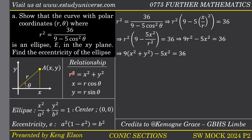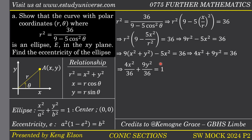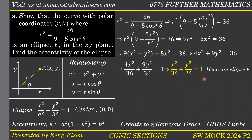From 4x squared plus 9y squared equals 36, we divide all terms by 36 to get the right-hand side equal to 1, so it resembles the standard equation of an ellipse. We get (4/36)x squared plus (9/36)y squared equals 1, which simplifies to x squared over 9 plus y squared over 4 equals 1. Since 9 equals 3 squared and 4 equals 2 squared, this is x squared over 3 squared plus y squared over 2 squared equals 1 — the equation of an ellipse in the xy plane. We have proven that the Cartesian equation of this polar curve is an ellipse.